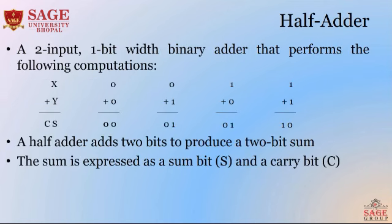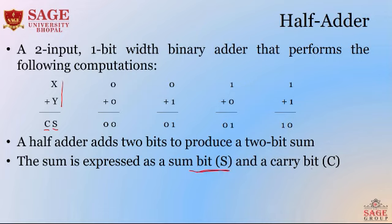Half adder is a two-input, one-bit width binary adder that performs the following computations. We have two bits, say x and y. When we add x and y, we get the output in two-bit form: s and c, where the sum is expressed as sum bit s and carry bit c.